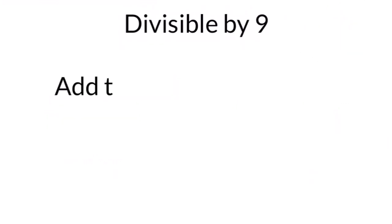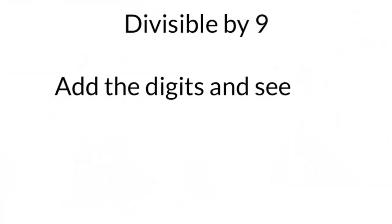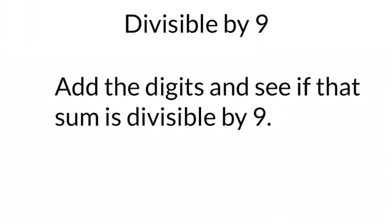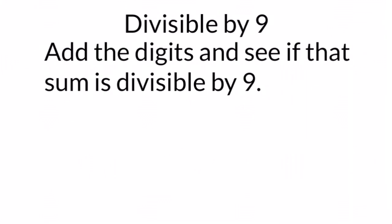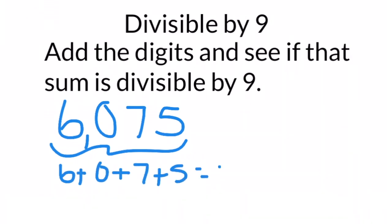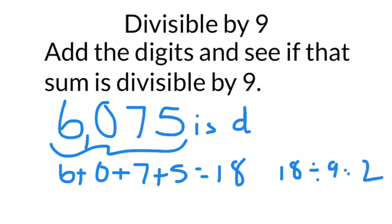Divisibility by nine is similar to divisibility by three. You have to add all the digits and see if that sum is divisible by nine. Is 6,075 divisible by nine? Add the digits: six plus zero plus seven plus five equals 18. Since 18 is divisible by nine — it goes in two times — the original number is divisible by nine.